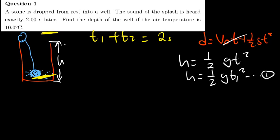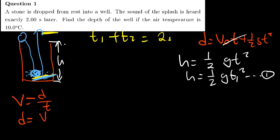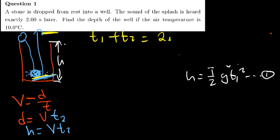For the speed of sound, velocity equals distance over time. The distance here is H, so making H the subject gives H = V·T2, where V is the speed of sound in air and T2 is the time it takes for the sound to travel from the bottom all the way to the top.